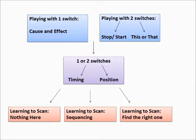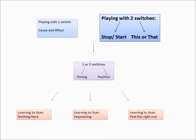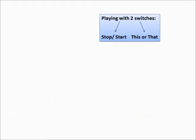Like in our first video, it's okay if the child presses a button by accident. Still carry out the effect to ensure you're strengthening the association. At this stage, we're using activities where there is no wrong answer. If the child presses a button whose effect is already happening, then let the effect keep going.